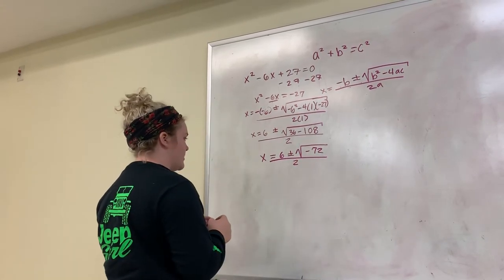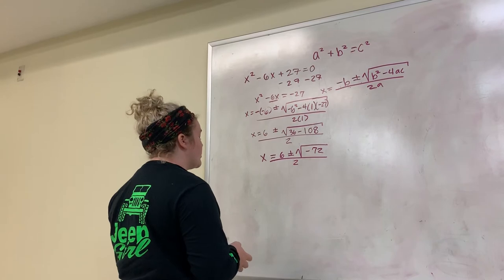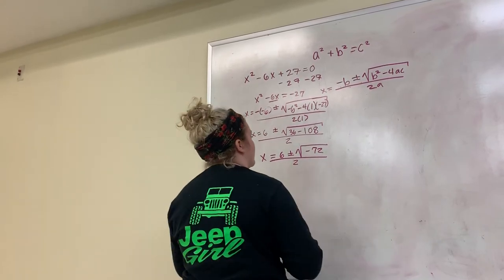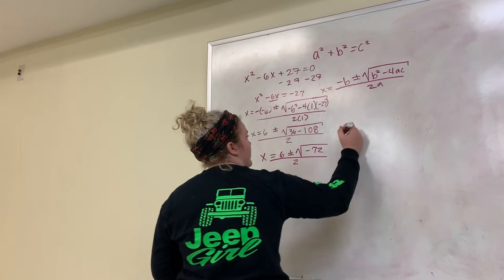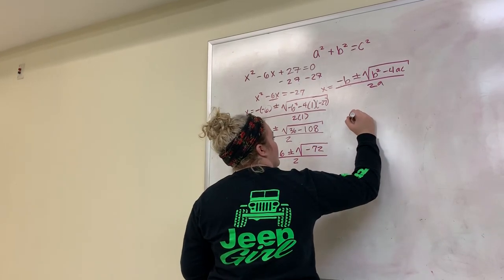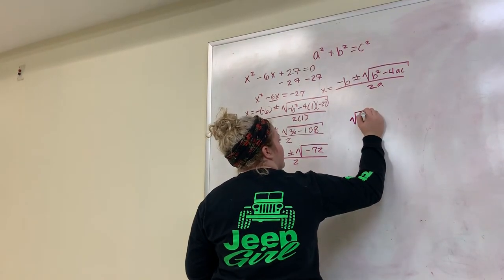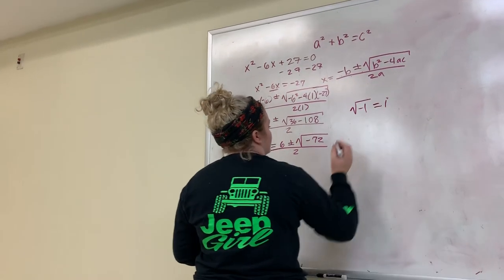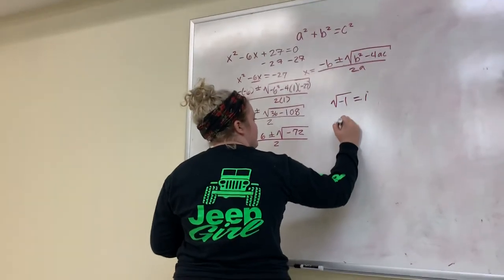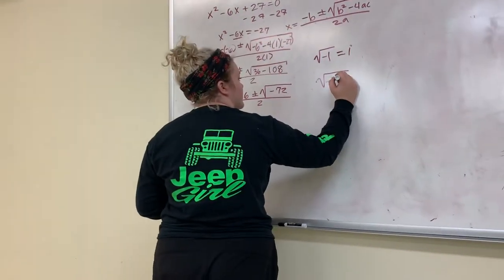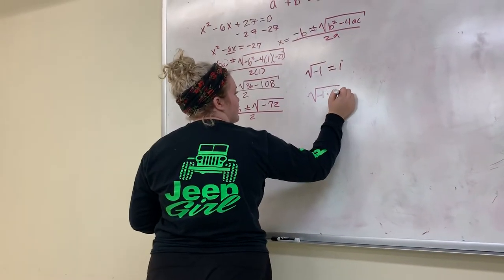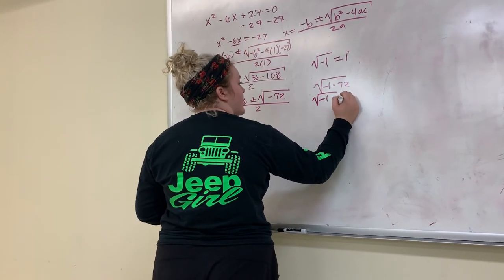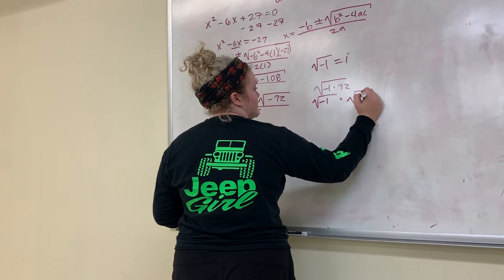First problem we have here is negative 72. Square root of negative 72 can't be solved. So I'm going to be solving this by turning it with i. We're just going to assume that any negative number, for this one using negative 1, equals i. So to solve this, I would be doing negative 1 times 72, and then it would be square root of negative 1 times square root of 72.